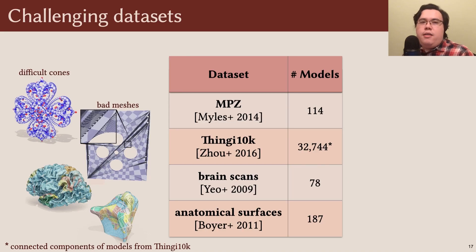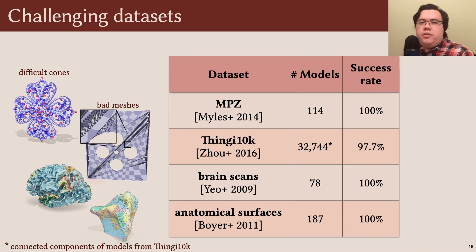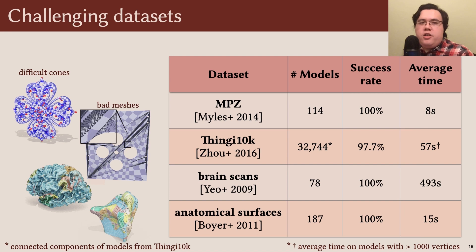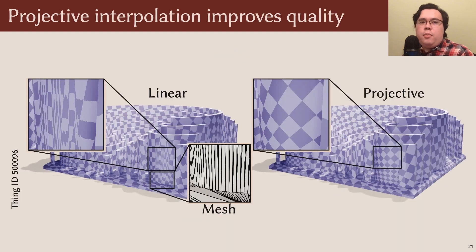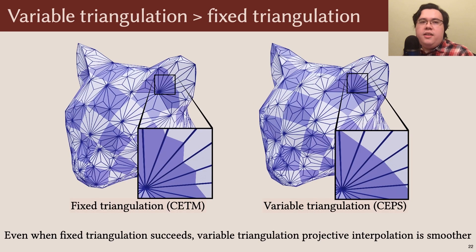Now, some results. We evaluated our algorithm on several challenging datasets. We tested cone flattening on MPZ and Thingy 10k, and spherical uniformization on brain scans and other anatomical surfaces. We successfully produced locally injective discrete conformal maps on all models, with the exception of Thingy 10k where we achieved a 97.7% success rate due to floating point issues on some of the most degenerate models. The code was generally fast, often finishing in a matter of seconds, although it took up to half an hour on a few of the most challenging Thingy 10k inputs. We found that whole-only flips provide a definite performance benefit, often providing a 2x speedup on MPZ. On models with poorly conditioned triangles, our projective interpolation provides a huge improvement over ordinary linear interpolation. And even when the fixed triangulation CETM succeeds, our variable triangulation method and novel interpolation can produce much smoother results.